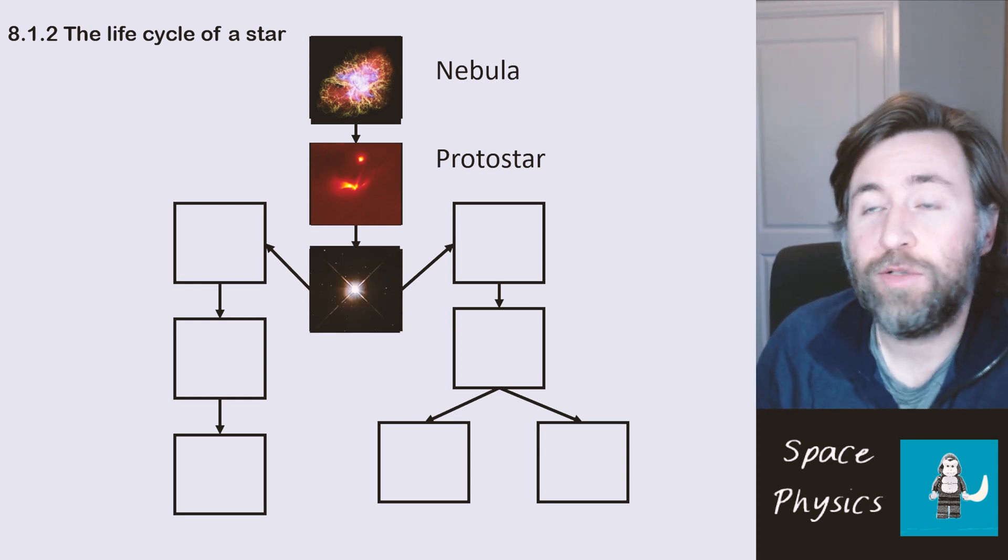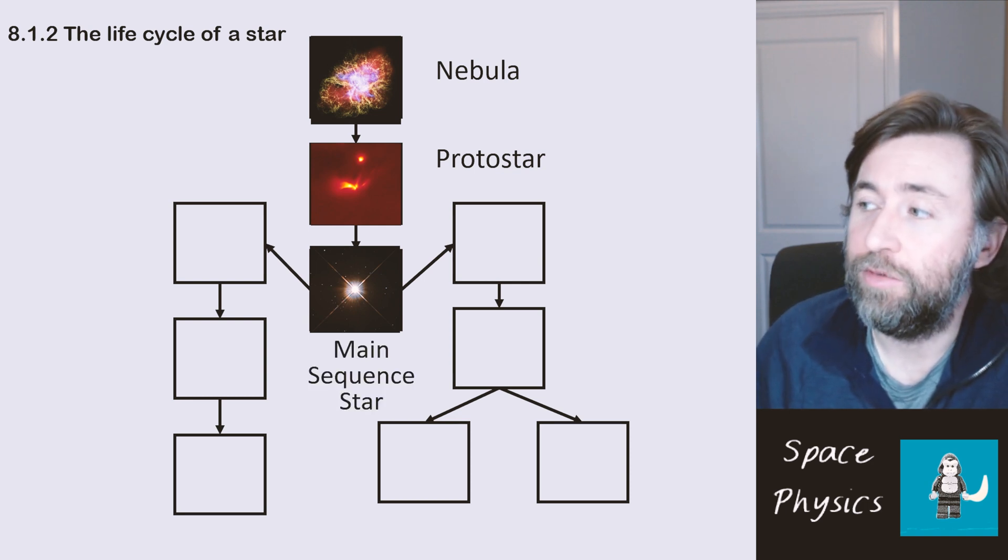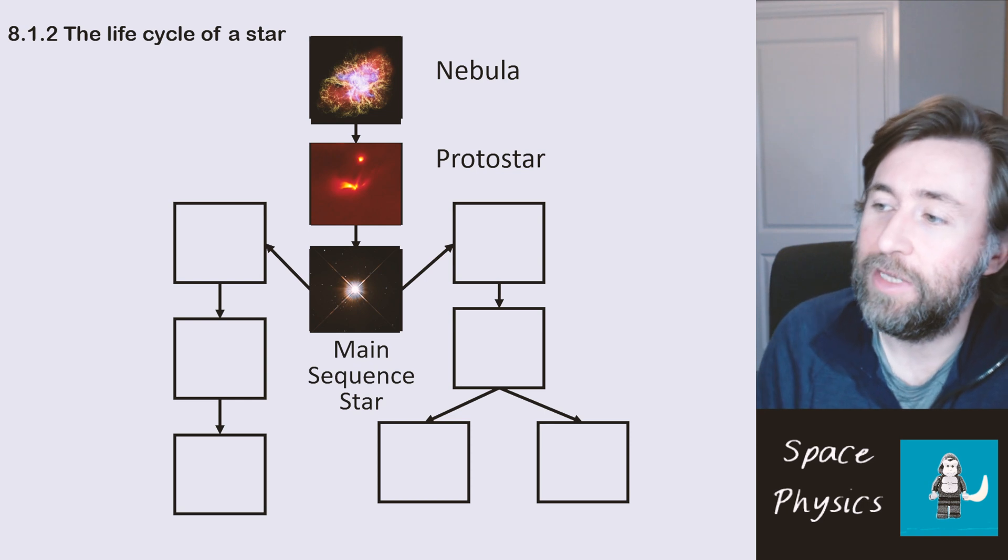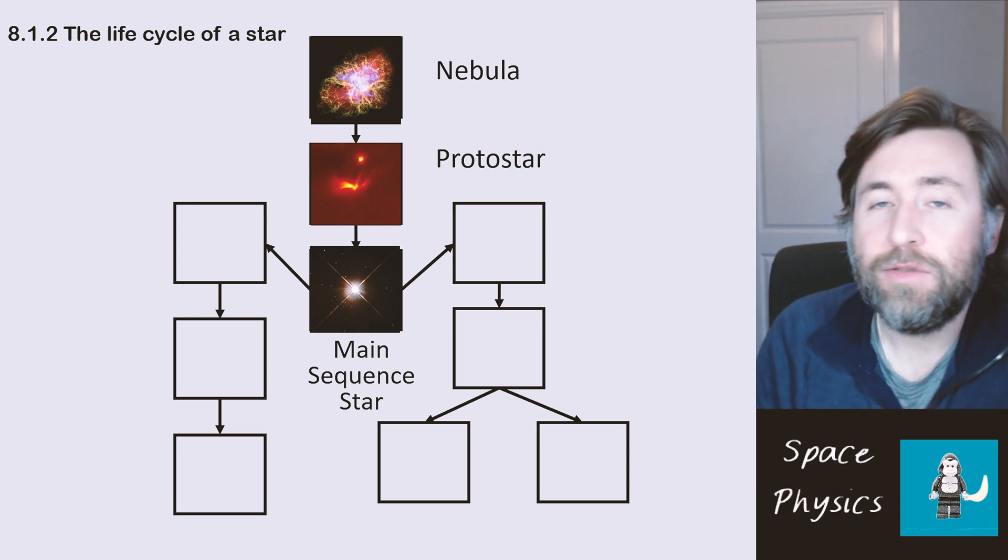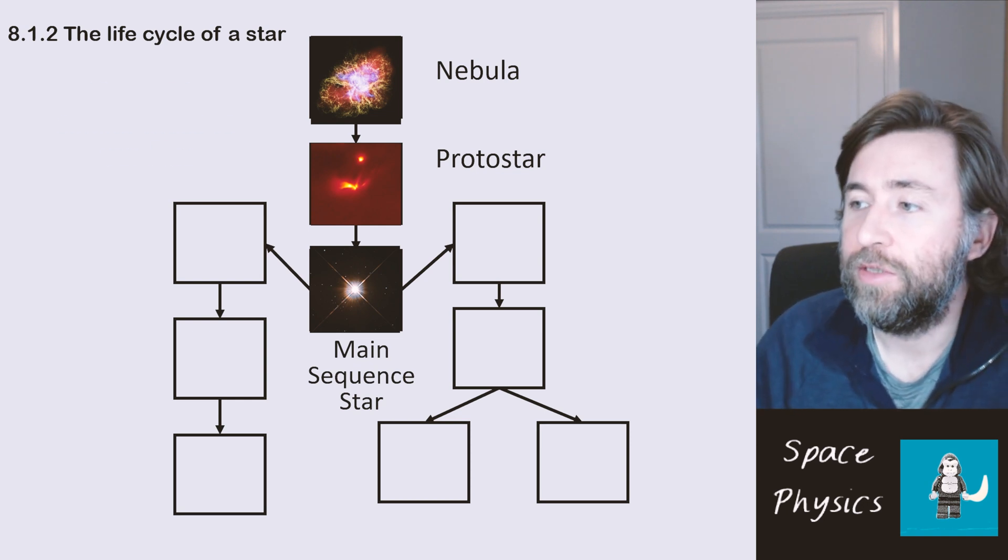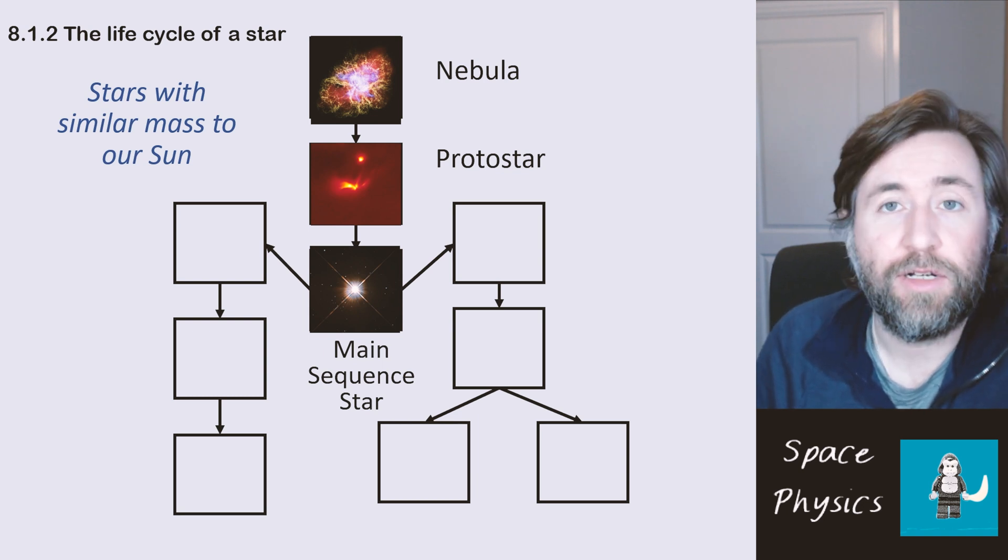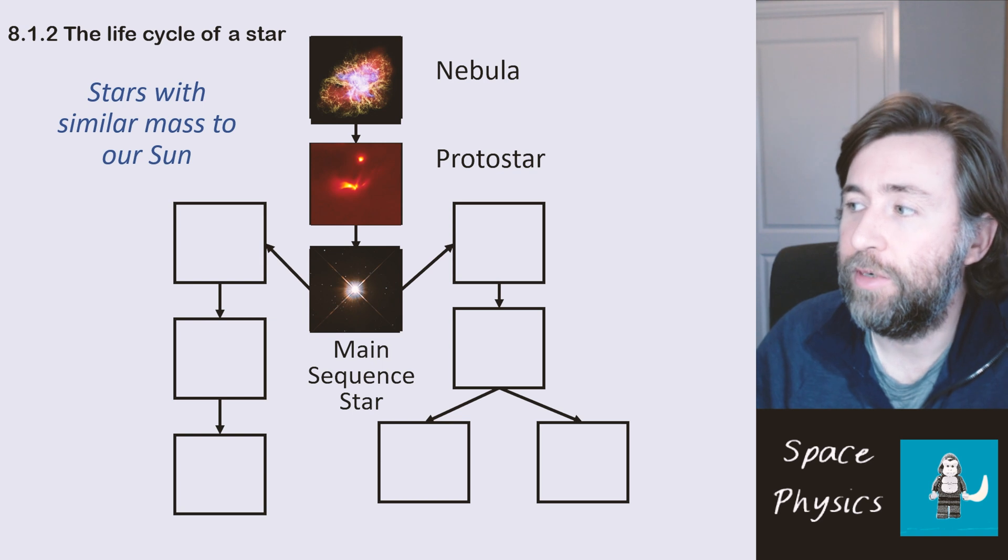The energy from the fusion in the protostar causes more nuclear fusion and you end up with a star which has a balance of the radiation pressure outwards and the gravity force inwards. And we call that a main sequence star. Now there's two different options here depending on which type of mass you have. So on the left hand side of the screen there you have stars with mass similar to our Sun. So we'll go down that route first.